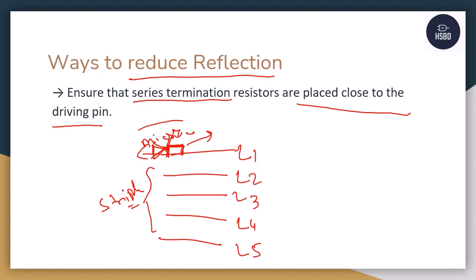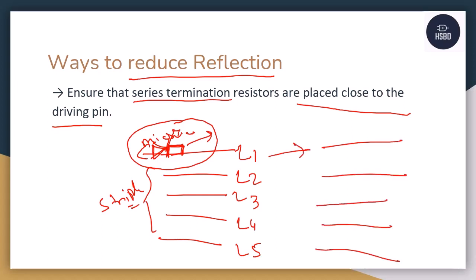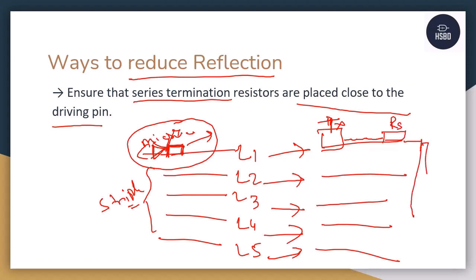Let me give you an example where the series termination resistor is not properly connected. If your driver IC is here and you have a long trace, and you have placed your series termination resistor further along — then using vias it goes to the next layers and continues to the receiver — that extra trace will create additional reflections in the signal. It is always advised, and it is a must, to keep your series termination resistor placed close to your driving pin.